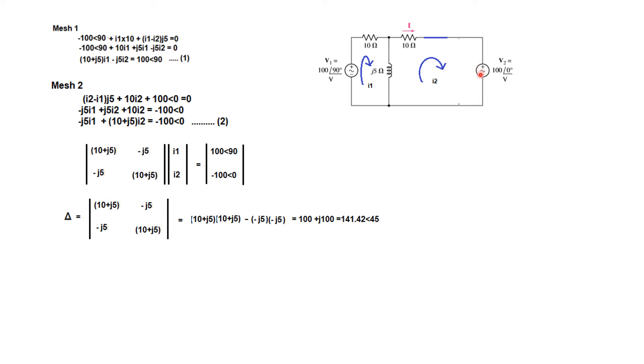And since we are interested in I2, because I2 multiplied by this will give the power, so instead of delta 1 we will straight away calculate delta 2. Delta 2: we replace the second column by the voltage source. This one comes here. And again by solving this, we get an answer of 1581∠-161.56°.